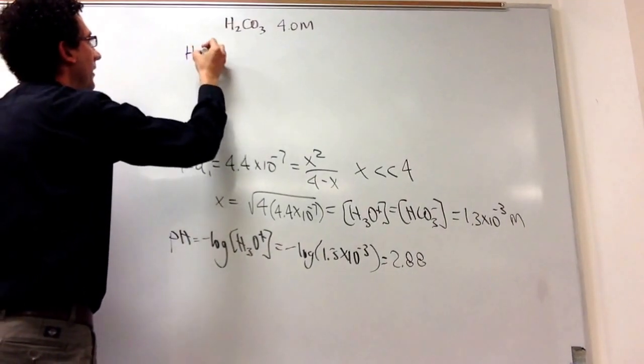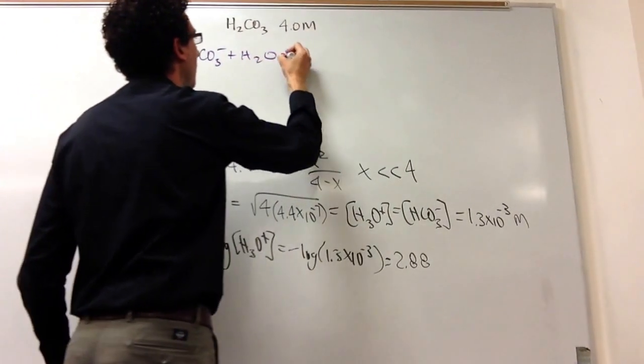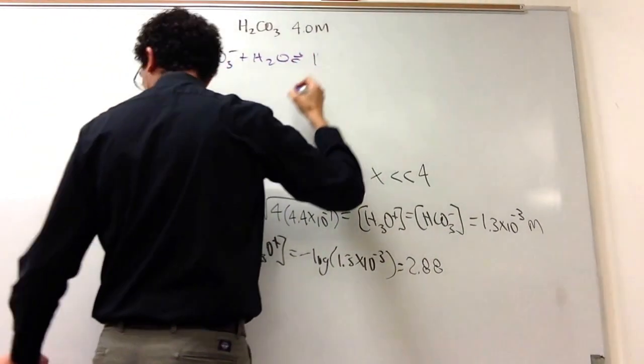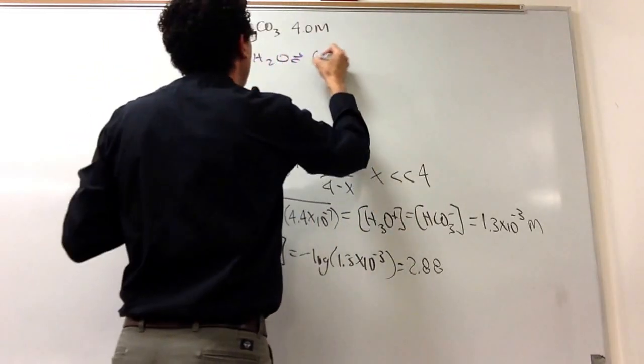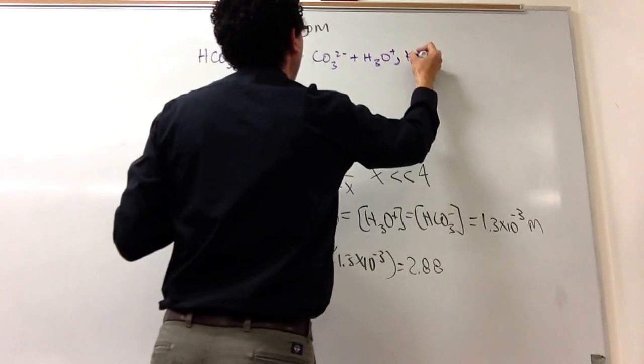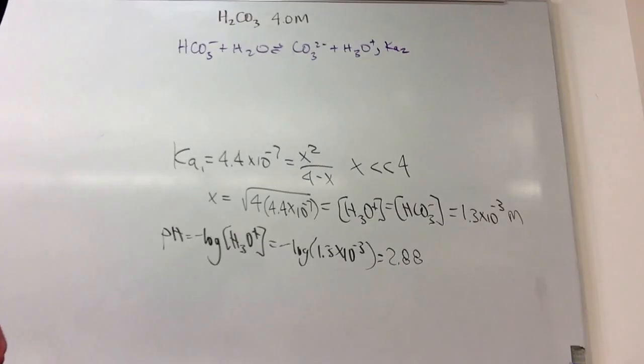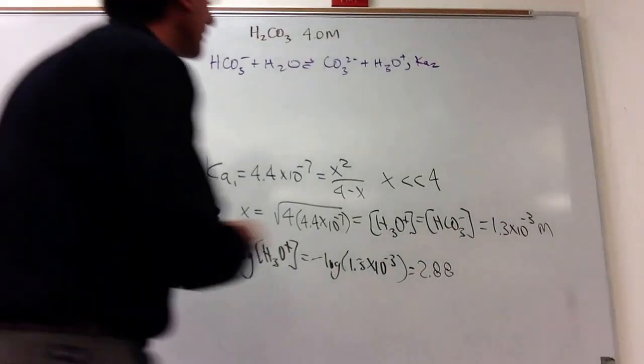HCO3 minus. And this will be a Ka2, and I can look up that number. Carbonic acid, 4.7 times 10 to the minus 11.